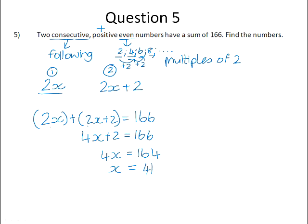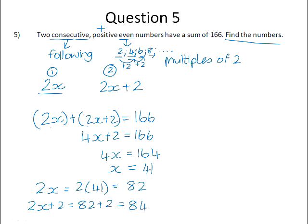So we were asked to find the numbers. We weren't asked to find x. Remember that my numbers were 2x and 2x plus 2. So 2x will be 2 times 41, which is 82. And 2x plus 2 will then be 82 plus 2, which is 84. So the two numbers are 82 and 84. And if you add them, 82 and 84, you get 166. So that is a way that we can check that we've got the correct answer.